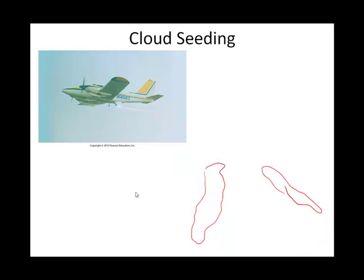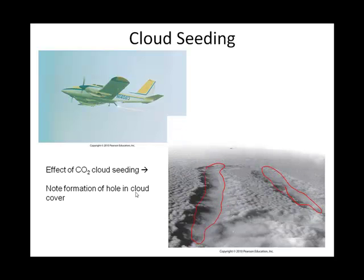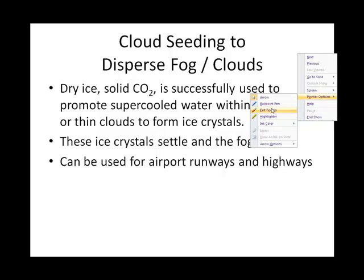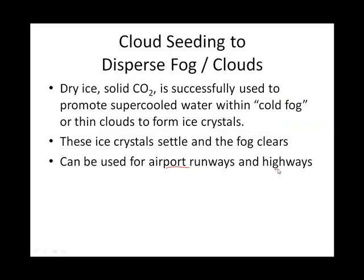Here's another way of manipulating the atmosphere specifically to clear fog, and it actually happens. If we have an airport runway or a highway where we need to get the fog out of the way, one approach for a cold fog is to promote supercooled water within the cold fog by adding dry ice. Then the ice crystals will settle and the fog will clear.